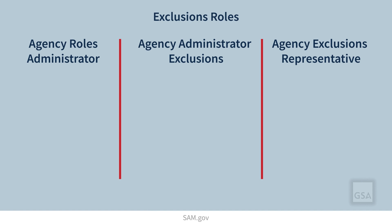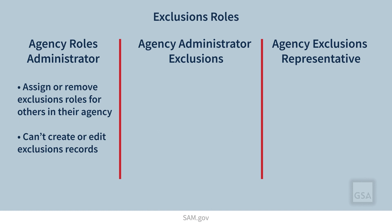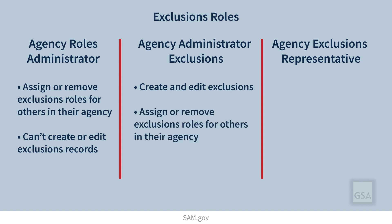The exclusion agency roles administrator can assign or remove exclusions roles for others within their agency, but they cannot create or edit exclusion records. The agency administrator exclusions role can create and edit exclusions, and assign or remove exclusions roles for others within their agency. The agency exclusions representative role can create and edit exclusions.